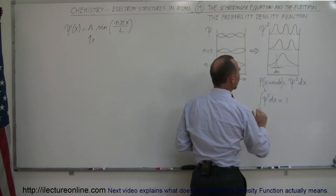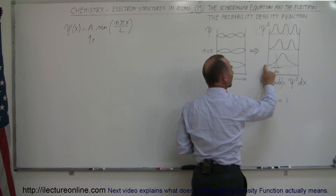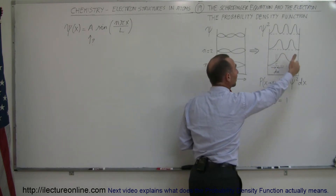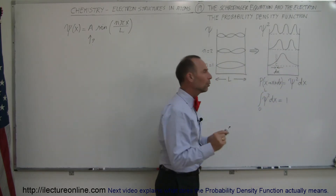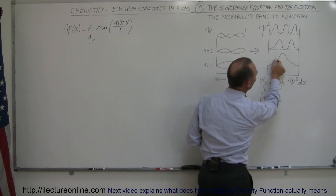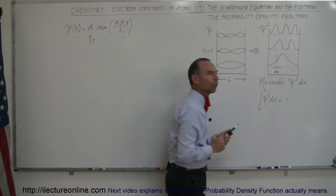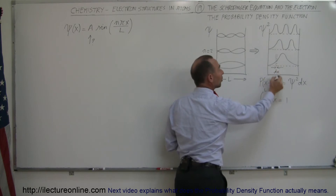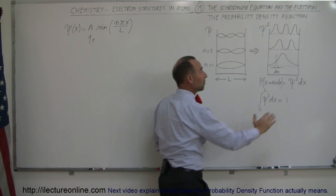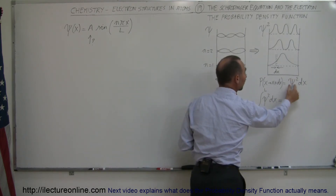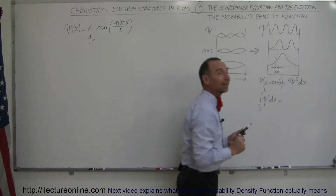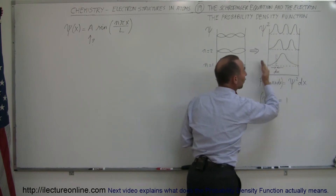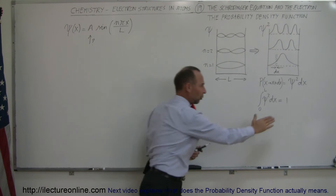There's a 100% probability that the electron will be somewhere from the left end of the box to the right end of the box. If we sum up all the probabilities, it equals 1 or 100%. If we want to know the probability for the electron to exist in a small region from position x to x plus delta x, we take the probability density — the wave function squared — times the width of that region, and that gives us the probability of the electron being right there.